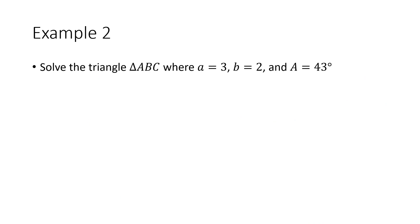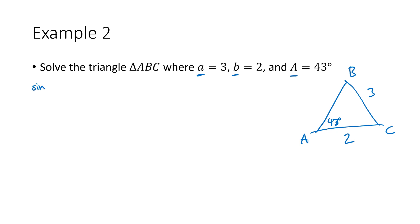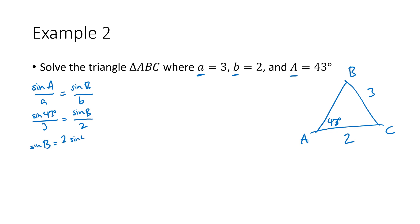Example 2: This time we're given two sides and an angle — little a is 3, little b is 2, and angle A is 43 degrees. We again use the law of sines: sine A divided by a equals sine B divided by b, since we know three of the four variables. Plugging in, sine of B equals 2 times sine of 43 degrees divided by 3, which is approximately 0.454666.